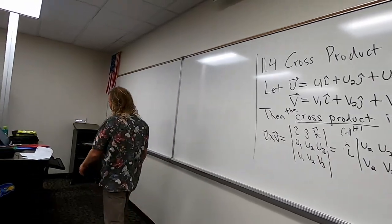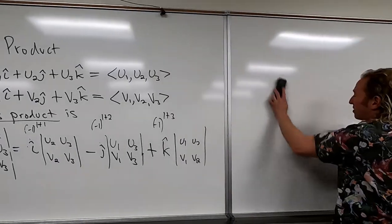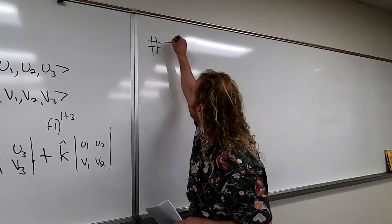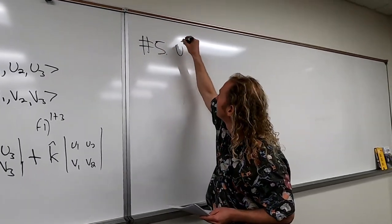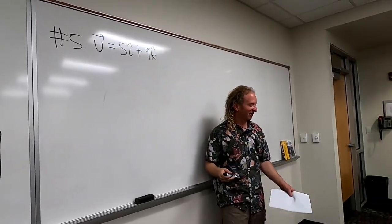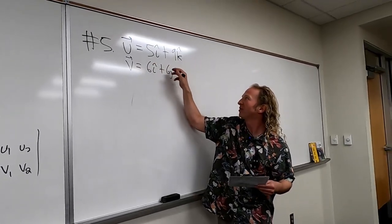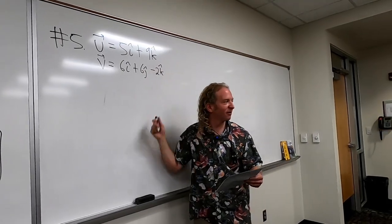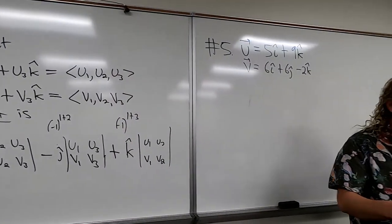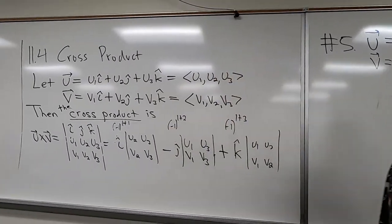Let's do some problems — I wrote down some homework problems this morning. Let's start with number 5, since the first four are easy and we'll come back to those. So we have two vectors: u = 5i-hat + 9k-hat, and v = 6i-hat + 6j-hat − 2k-hat. The question has two parts: it wants u cross v and v cross u.